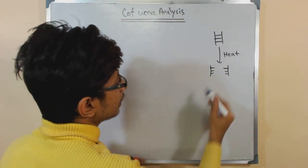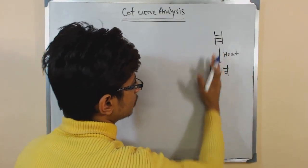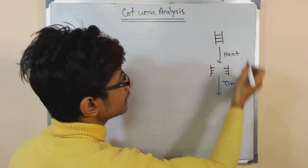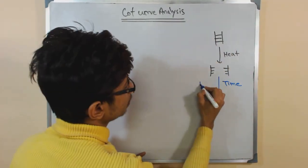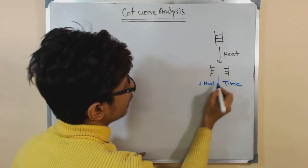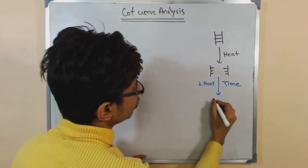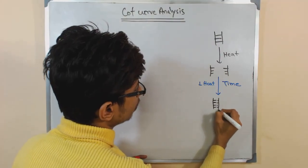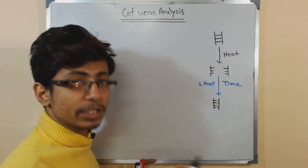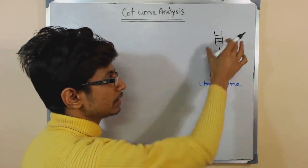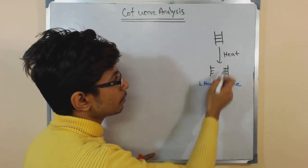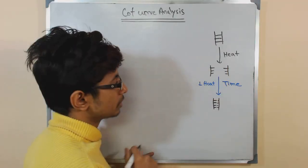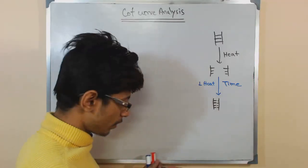After that, once we remove the heat and slowly allow time to pass, those DNA strands start to anneal with each other, just like they were before. This process is called renaturation. When we apply heat and the strands separate, that is called denaturation; when they come back together, it is renaturation.